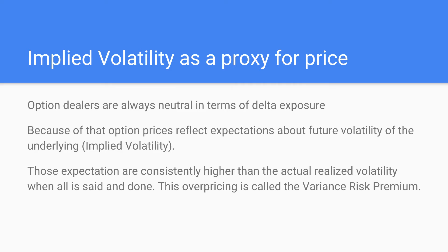The fact that options are priced a certain way allows us to capture the expectation of implied variance. Once the option expires you realize that the actual realized volatility of the underlying is always — or most of the time — lower than what it was priced. That excess pricing, that overpricing, is what we call the Variance Risk Premium. It's a premium that option dealers get paid for taking this risk, to entice them to sell options. The VRP is ever-present, particularly in American markets, as well as in equities, equity index, and commodities markets.